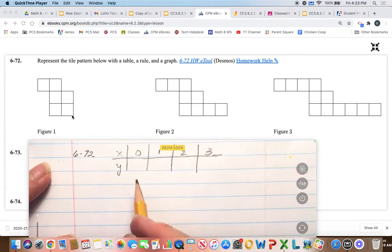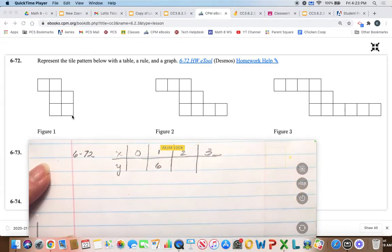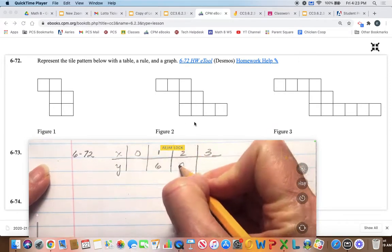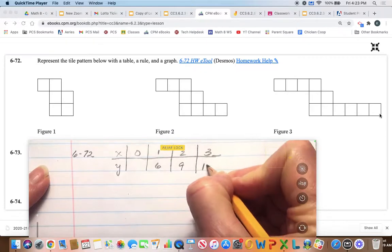And so with figure one, we counted, and we know we have six tiles, and now with figure two, it looks like we've got one, two, three, four, five, so five on the top, and then four on the bottom, so nine total. And then here we've got four plus two is six, and then on the bottom here we have six more, so that's a total of 12.